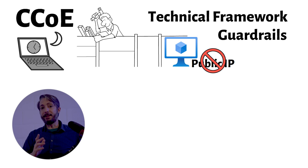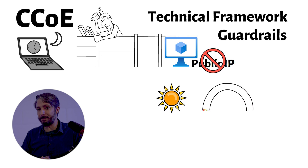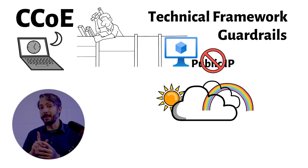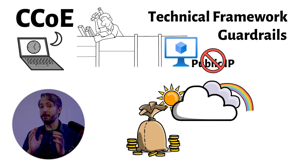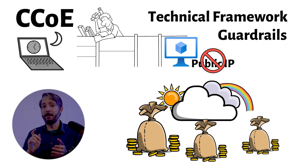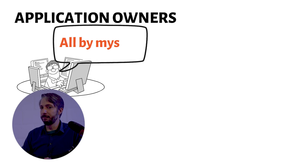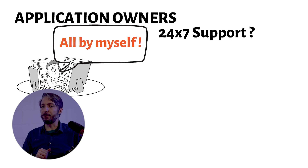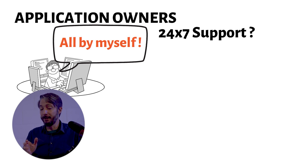So, is a CCOE model all sunshine and rainbows? Well, definitely not. While the concept and ideas are great, it may not be suitable for every company. You can see why public cloud providers such as Amazon and Microsoft are pushing for this model — it allows resources, which of course means income for them, to easily and quickly be provisioned. Another consideration: do you really want application owners to provision their own resources? How do you handle 24/7 support on those resources? Are the application owners capable of doing that, and do they even want to?